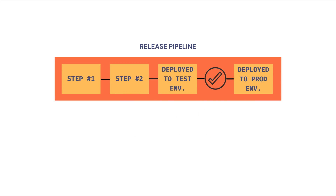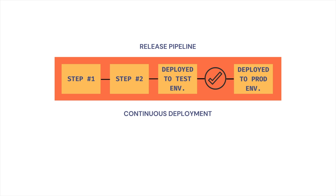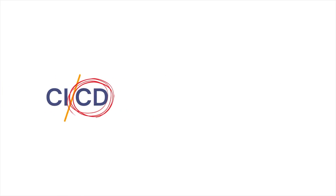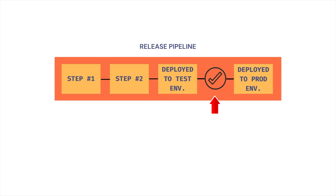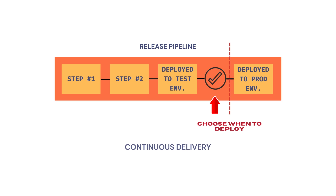The release pipeline powered by these tools results in the software being successfully deployed first to the test environment, where it goes through manual or automated tests. If the test results are positive, the software is deployed automatically to the production environment without any explicit approval from the development team or product management — this is called continuous deployment. The CD in CI/CD can be continuous delivery or continuous deployment, depending on one little nuance: after the code successfully passes all the tests in the release pipeline, if the team or product management exercises the right to choose when to deploy to production for marketing or other reasons, then the process is called continuous delivery.